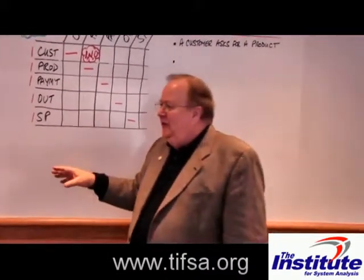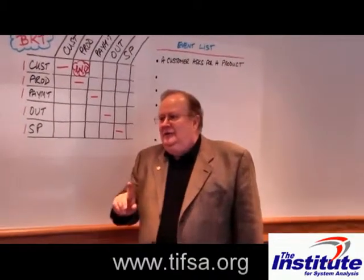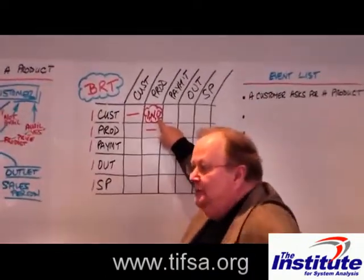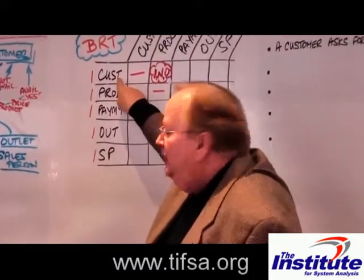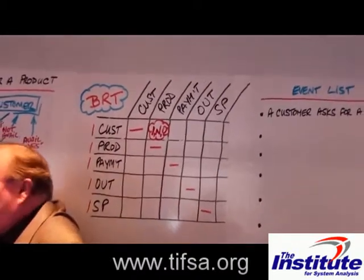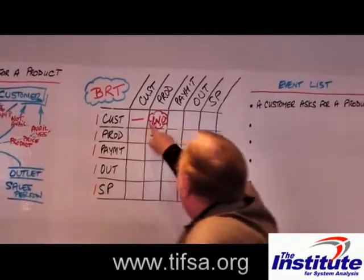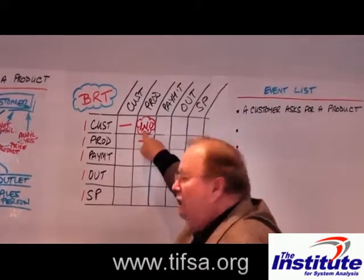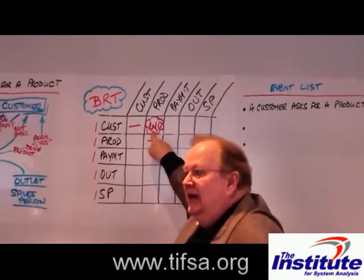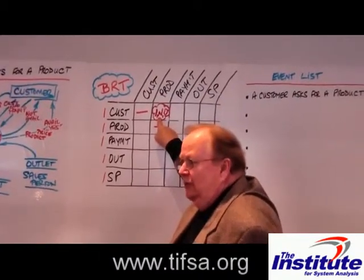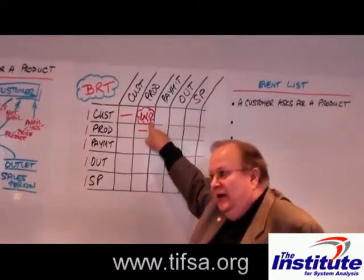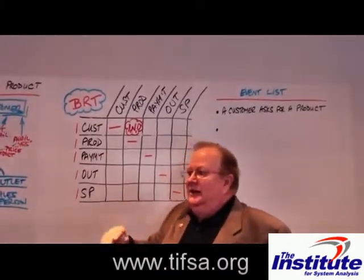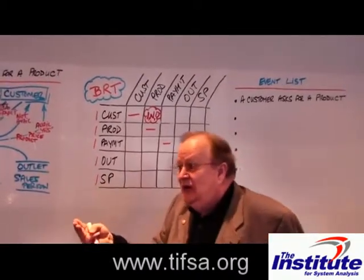So that becomes a requirement of the system — somewhere along the line, somebody has to figure out how we can keep track of those customers. So here we have three rules, which get documented under the object 'customer.' We're going to have some data attributes, and now we've found three new rules: may buy one product; may buy several products (or combined: might buy one or more products); and might never buy a product.